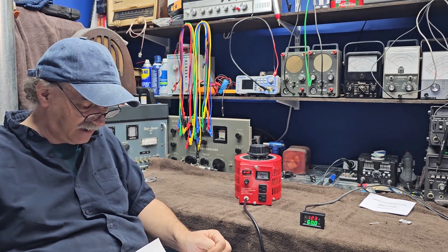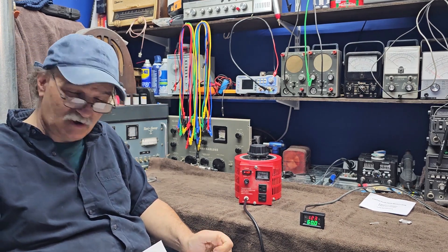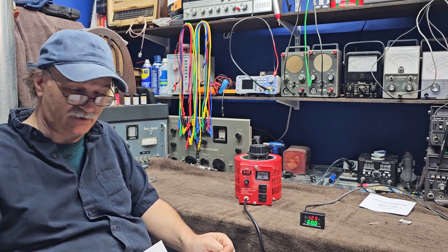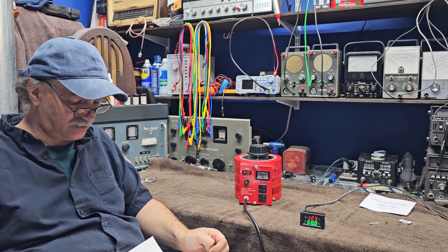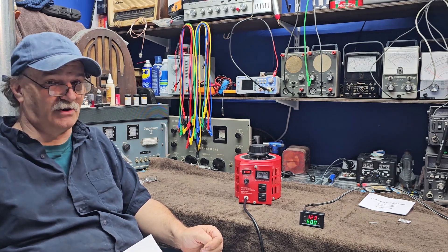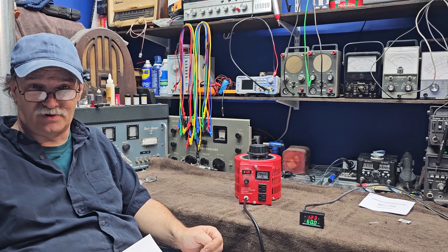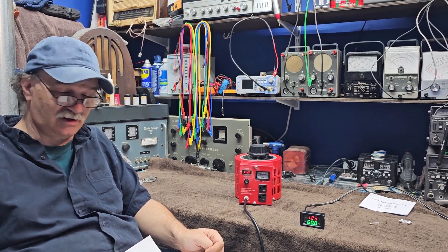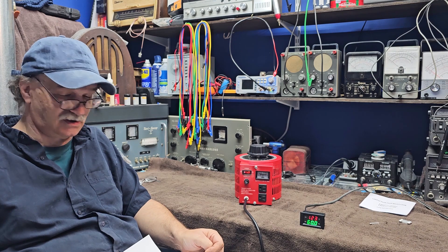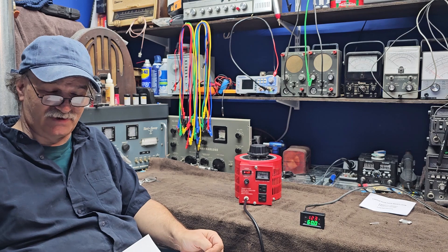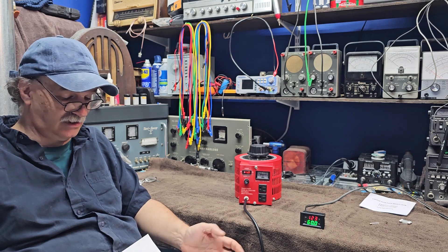We're going to build a dim bulb tester but not like the same ones that everybody else builds. It's going to be a little bit of a different unit and we can use this to very slowly bring up a radio to make sure that we've restored it properly, dealt with the power supply correctly, or there's no shorts. Rather than plugging it in or immediately turning a dim bulb tester on we can bring it up very slowly.